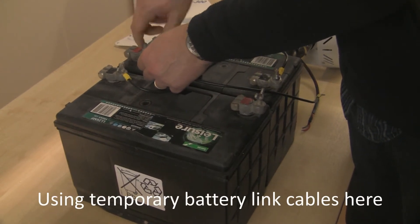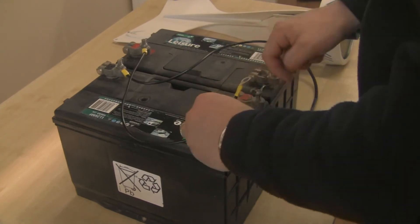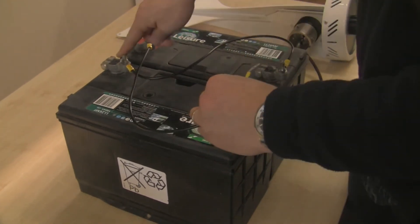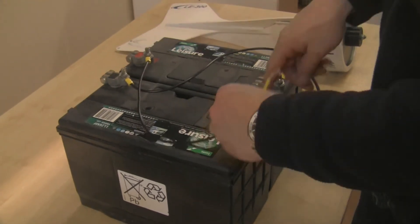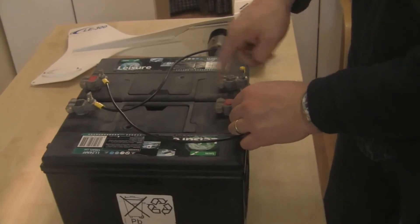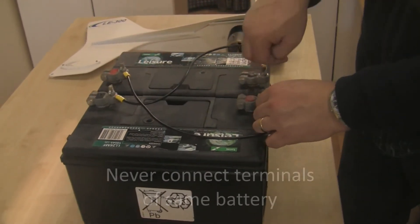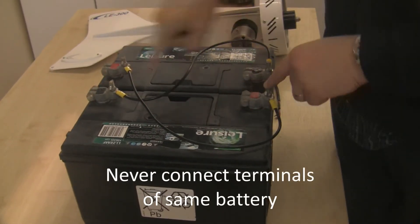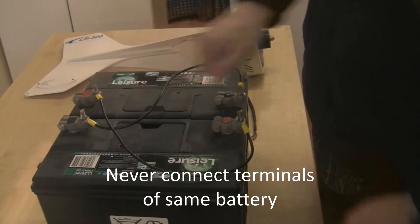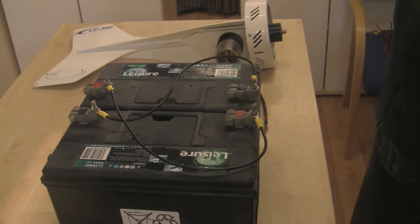I'll just pop these screws on finger tight. So we've got negative to negative and positive to positive. When you're working with batteries, you need to make sure you're incredibly careful not to short out the batteries. You don't want to put the cable between those two terminals or those two terminals, because there'll be a big spark. Okay, that's that done.